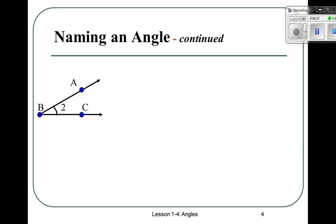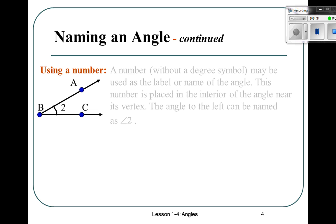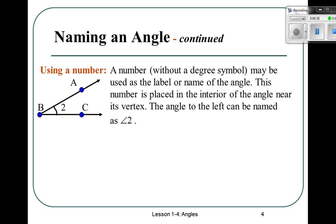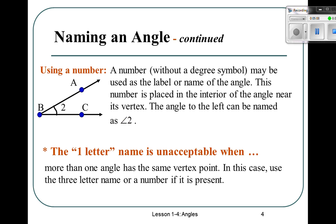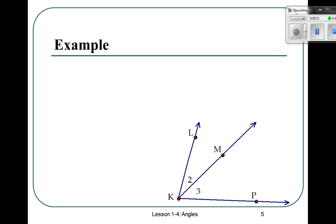What do you notice different about this drawing? You've got the number two in the middle there. You can use a number. A number without the degree symbol may be used as the label or the name of the angle. This number is placed in the interior of the angle near the vertex. The angle to the left can be named as angle two. Fill in number five.